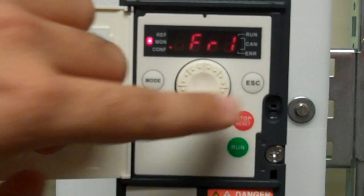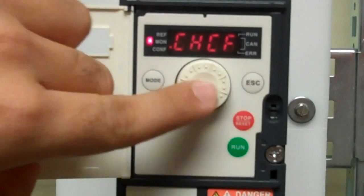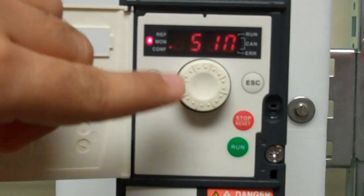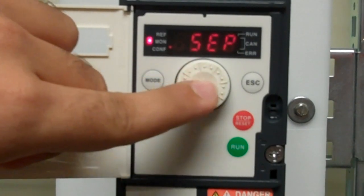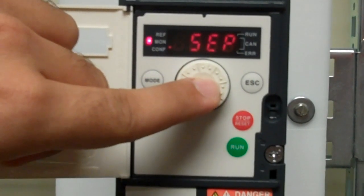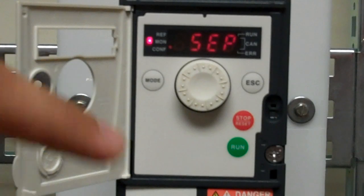Change this parameter from SIN, which is default, to SEP for separate controls. This is correct because we're going to have separate control for your speed and your command.